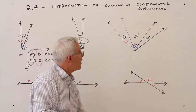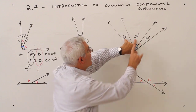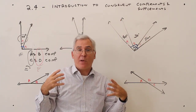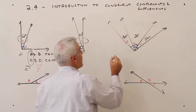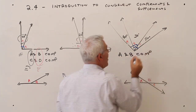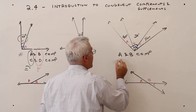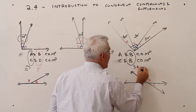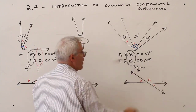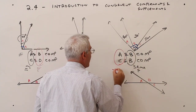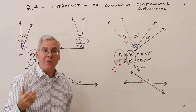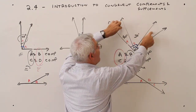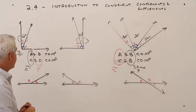So here's what I'm saying: if A and B are complementary, and C and B are complementary, and they share the same chunk — B at 50 degrees — then those other parts must be congruent. A and B are complementary; C and B are complementary. Since B is the same angle, it's congruent to itself, and therefore A and C are congruent.